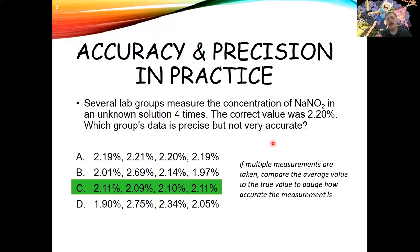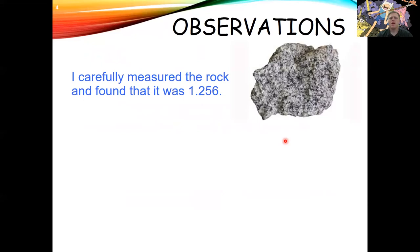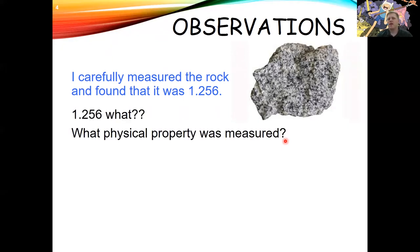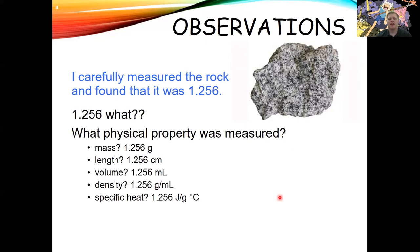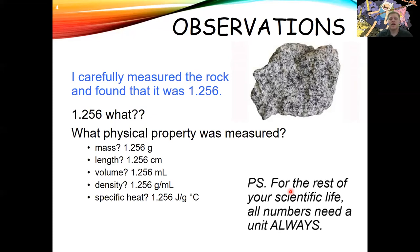Now let's talk about another super important part of a measurement. I took a granite rock, carefully measured it, and found that it was 1.256 — but what's the problem? It didn't express anything useful. 1.256 what? Is it 1.256 grams, 1.256 centimeters, something about heat capacity? You don't know. So that number is completely useless. For the rest of your career in science, every number should have units with it.